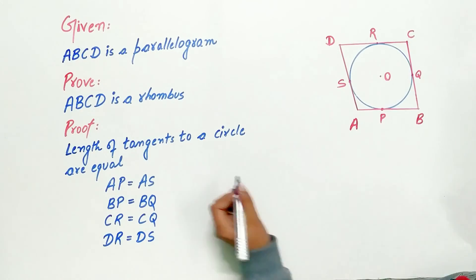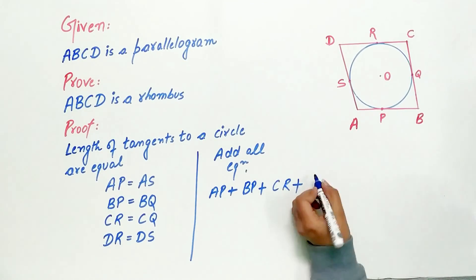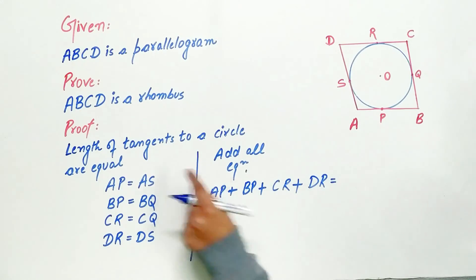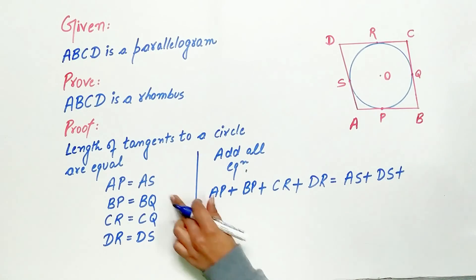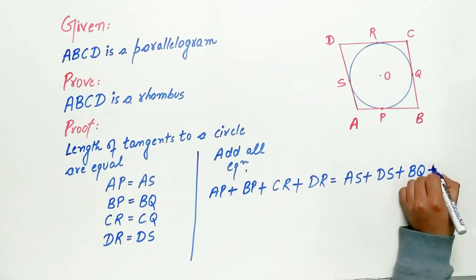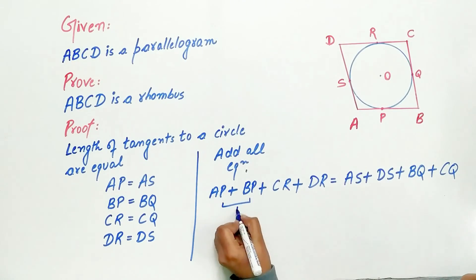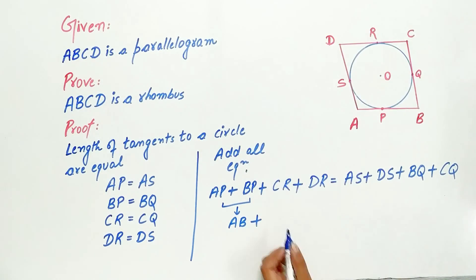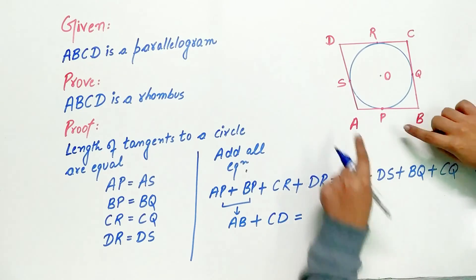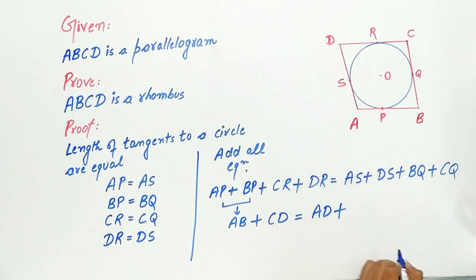Now add all the four equations. AP plus BP plus CR plus DR is equal to AS plus DS plus BQ plus CQ. Now, AP plus BP is AB. CR plus DR is CD. AS plus DS is AD, and BQ plus CQ is BC. So AB plus CD equals AD plus BC.